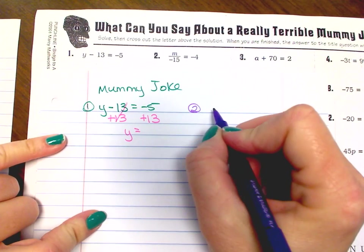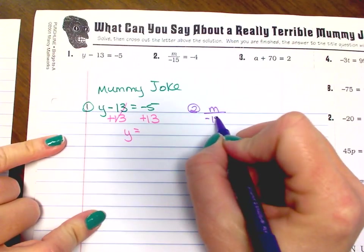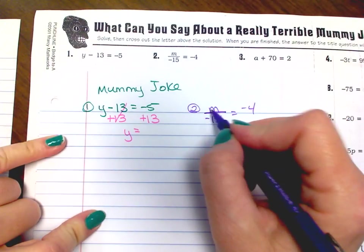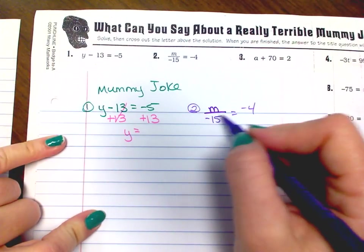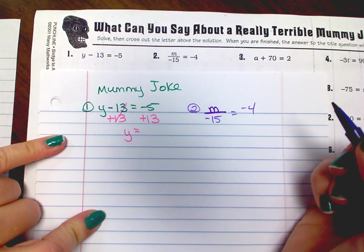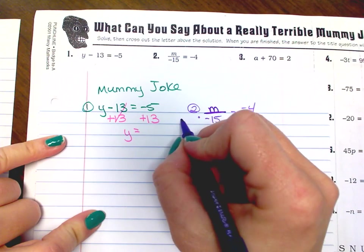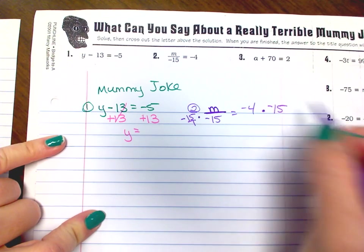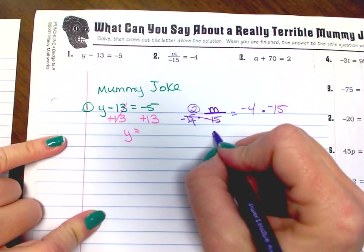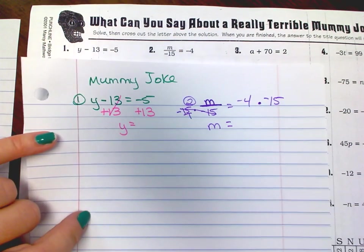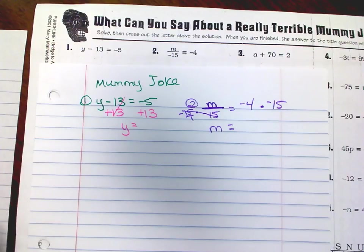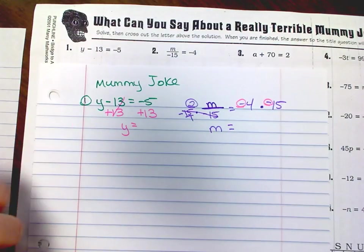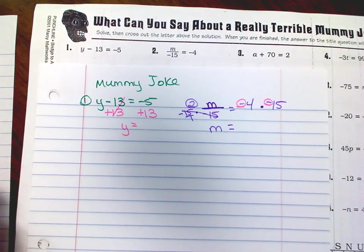Number two. M is divided by negative 15 equals negative 4. So you find your variable and ask what is it being done with this other number — it's dividing. So we do the opposite, which is multiplying. Multiply by negative 15 on that side, multiply by negative 15 on this side. That cancels out. Remember your rules about integers: a negative times a negative, so your answer will definitely be a positive.